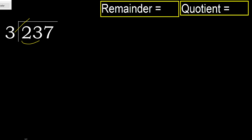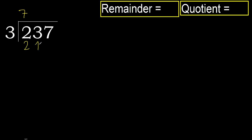But not greater. 3 multiplied by 8 is 24 — 24 is greater. 3 multiplied by 7 is 21 — 21 is not greater, ok. Subtract, remainder is 2.